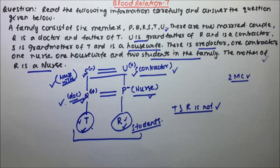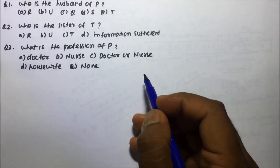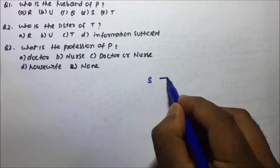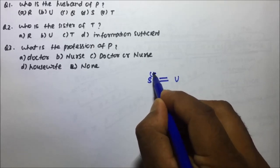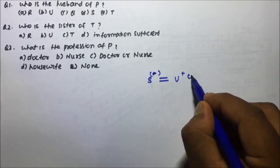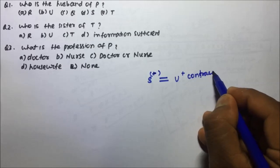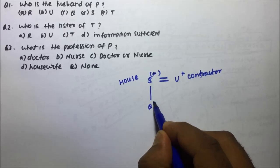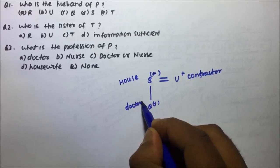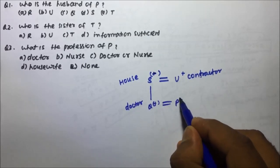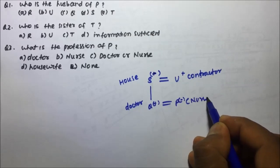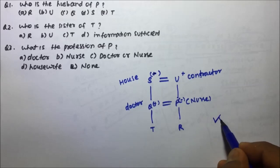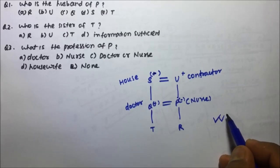Now I will write the blood relation tree: S is female and housewife, U is contractor. Then Q is doctor and P is nurse, and then T and R are the children. So this is the blood relation tree we have obtained.